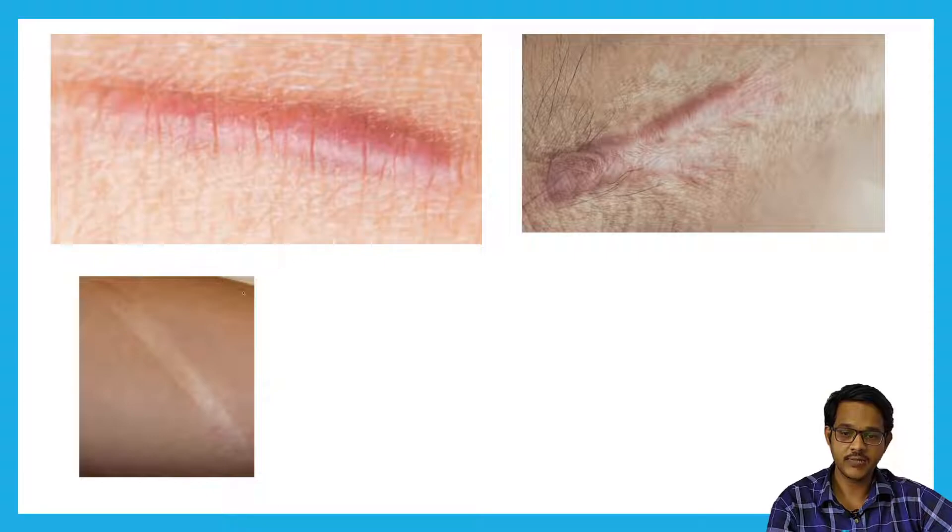These are a few images of scar tissues. We can see that glistening is present. A few scar tissues may hypertrophy and elevate from the surface, while a few may not elevate and will lie just below the surface of the skin.